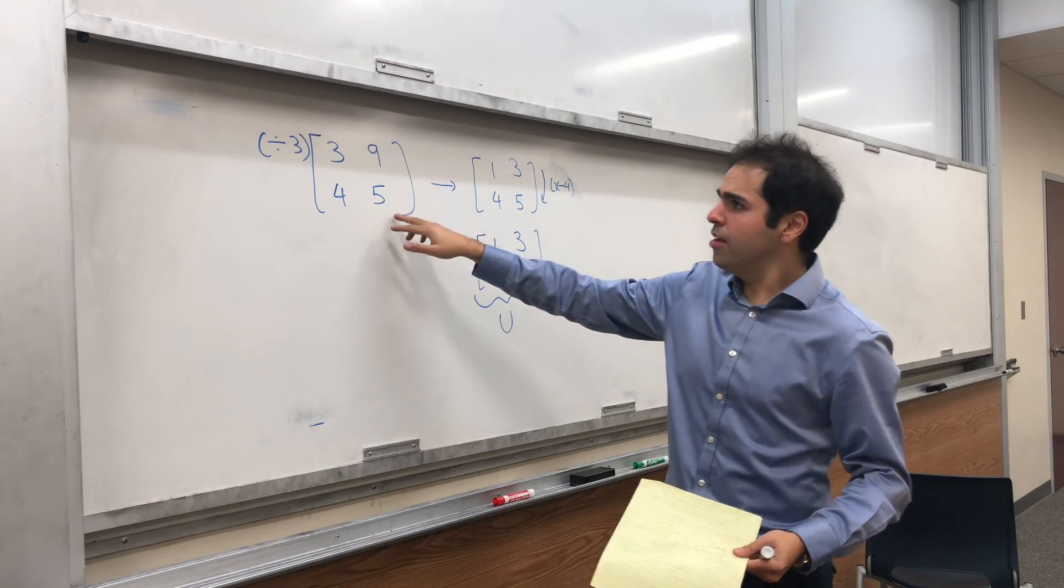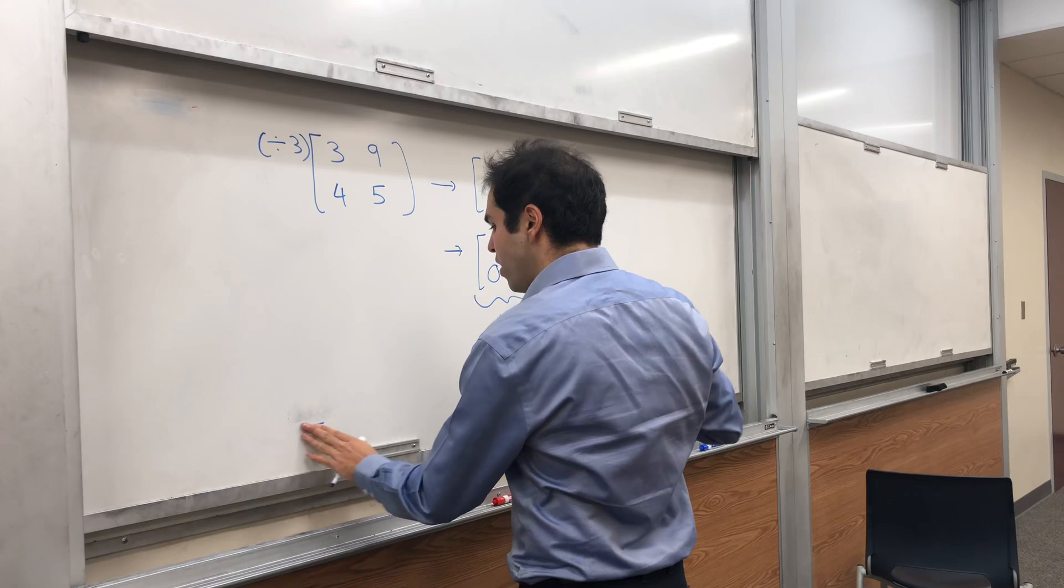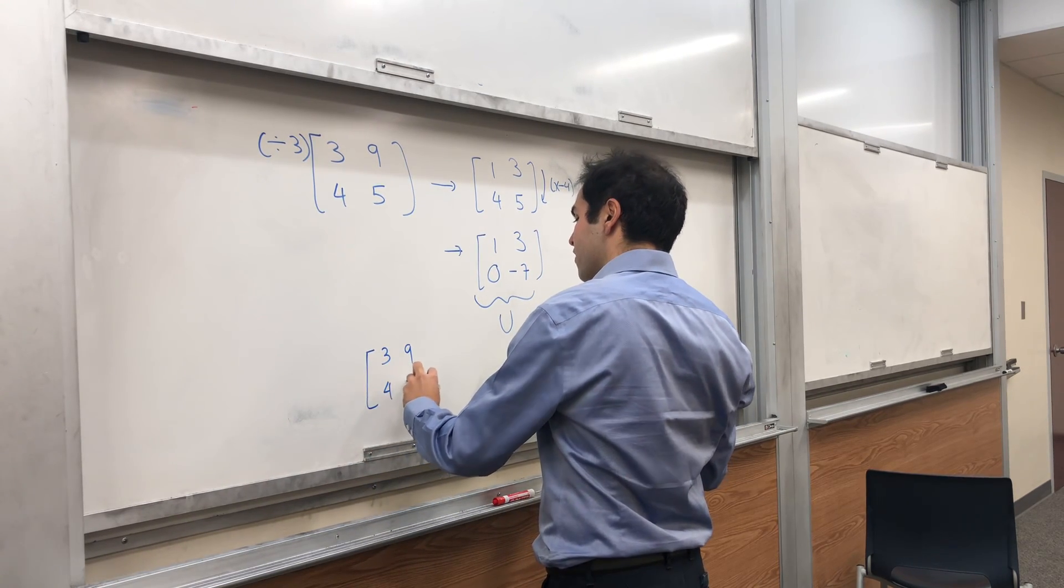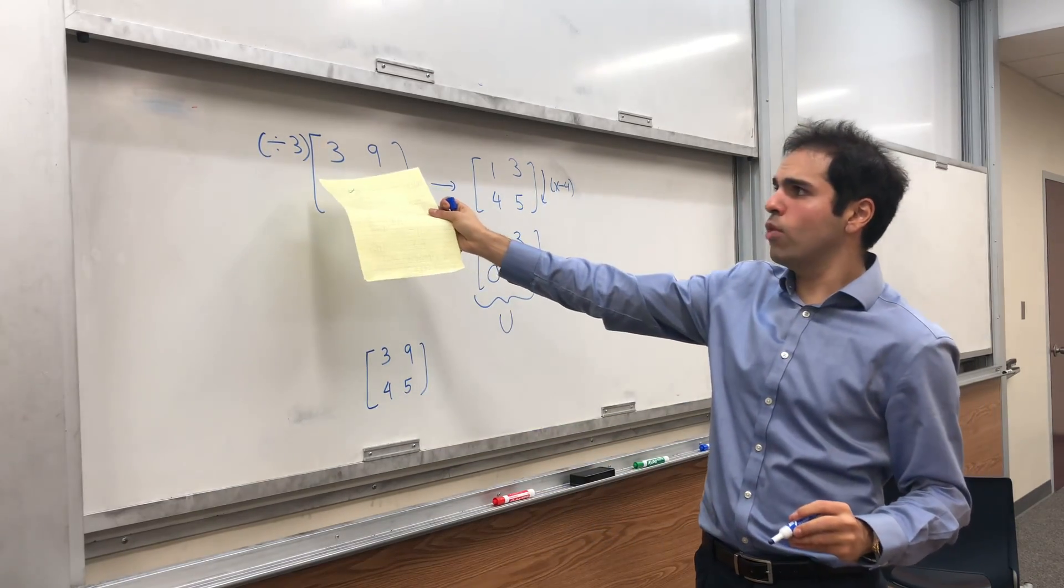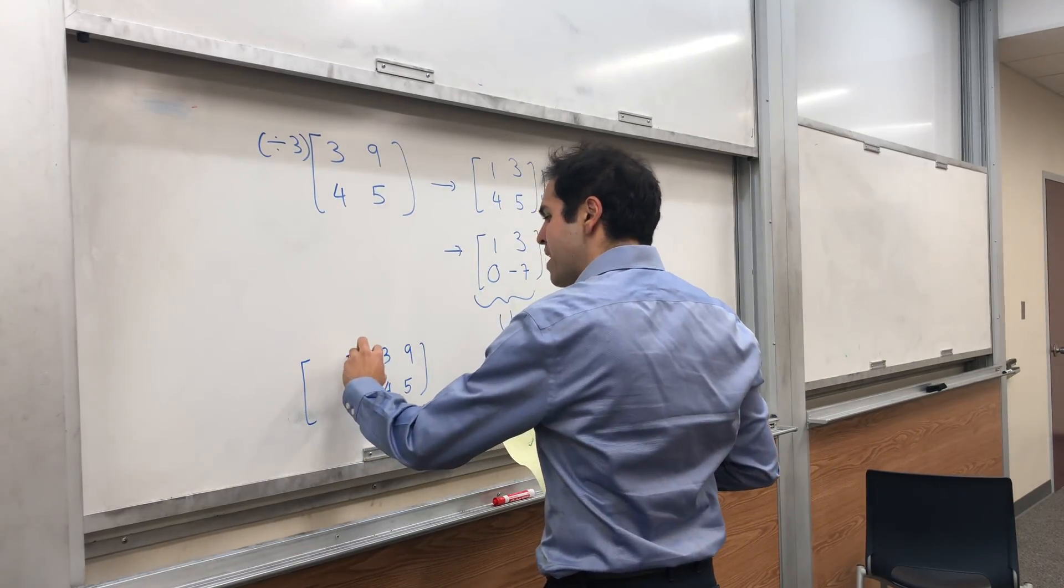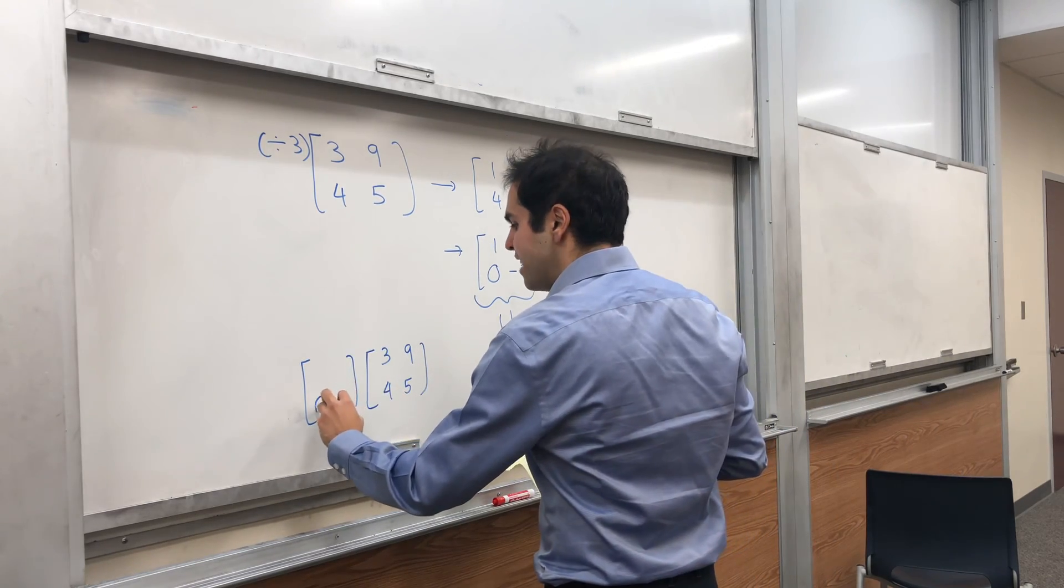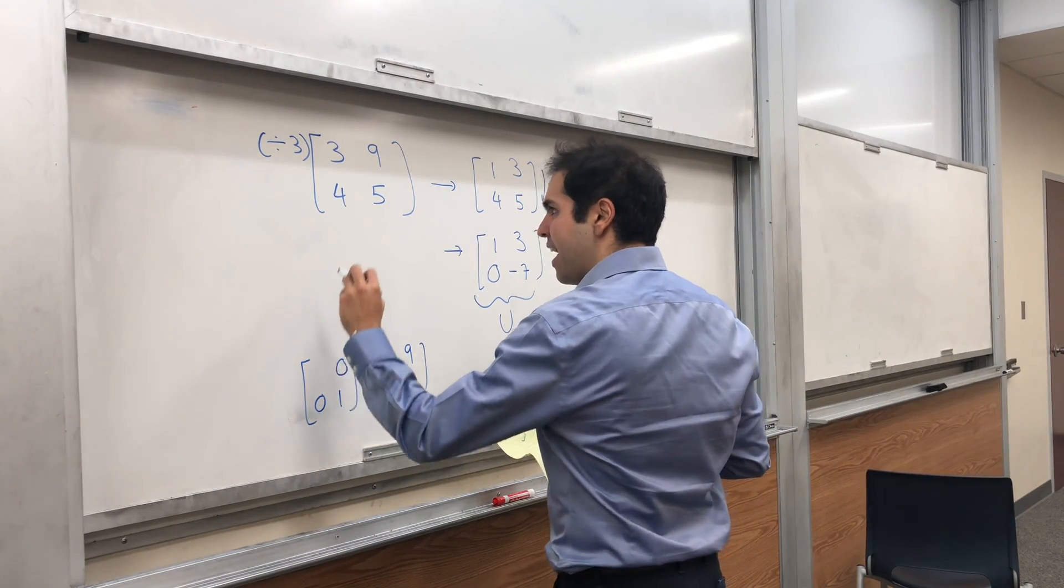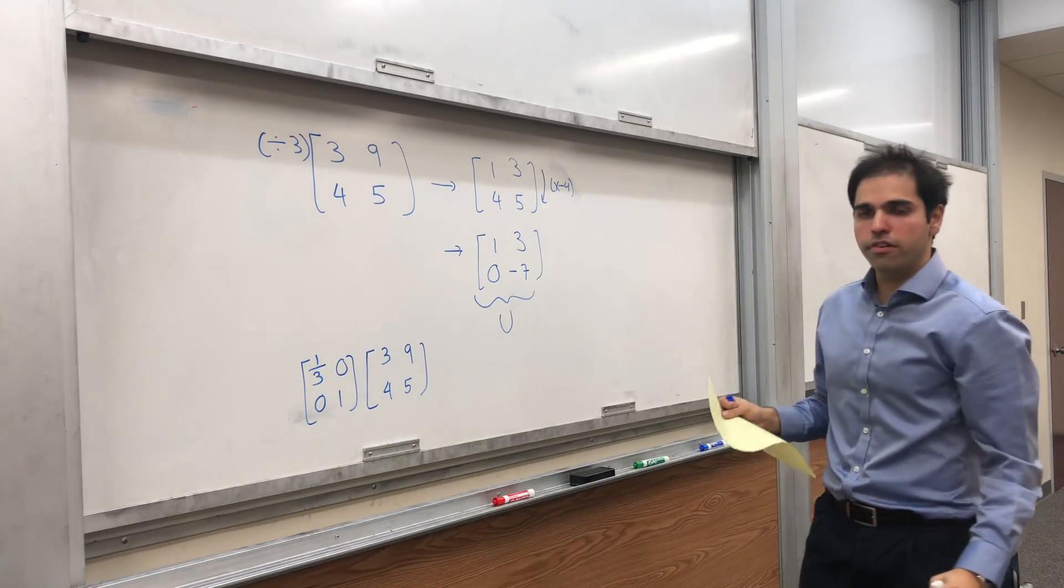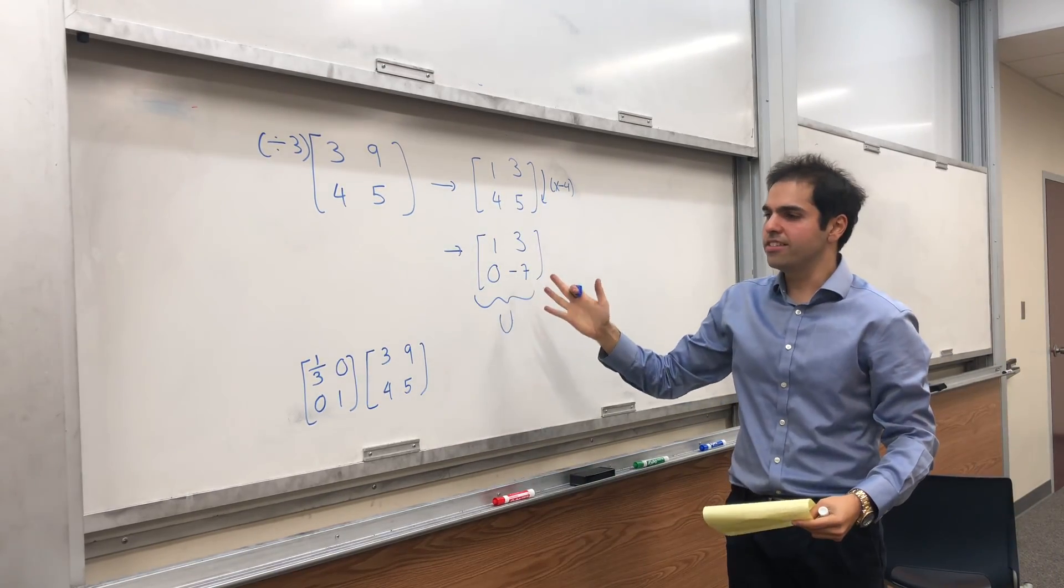And we just get L by writing those two operations as matrices. So, what did we have? We started with 3, 9, 4, 5. And then the first thing was, we divided the first row by 3. And the elementary matrix that says divide the first row by 3, it's the identity matrix, except the first entry becomes one-third. And you can indeed check that if you do this multiplication, you get this matrix.